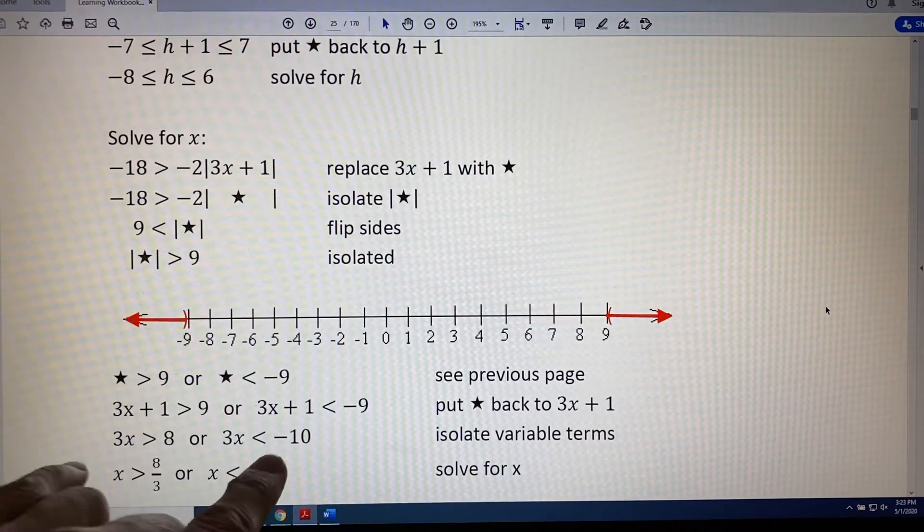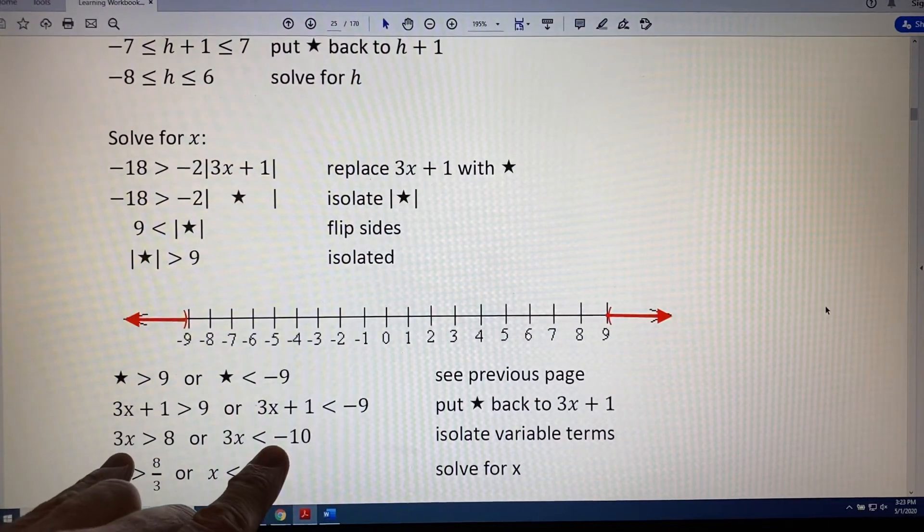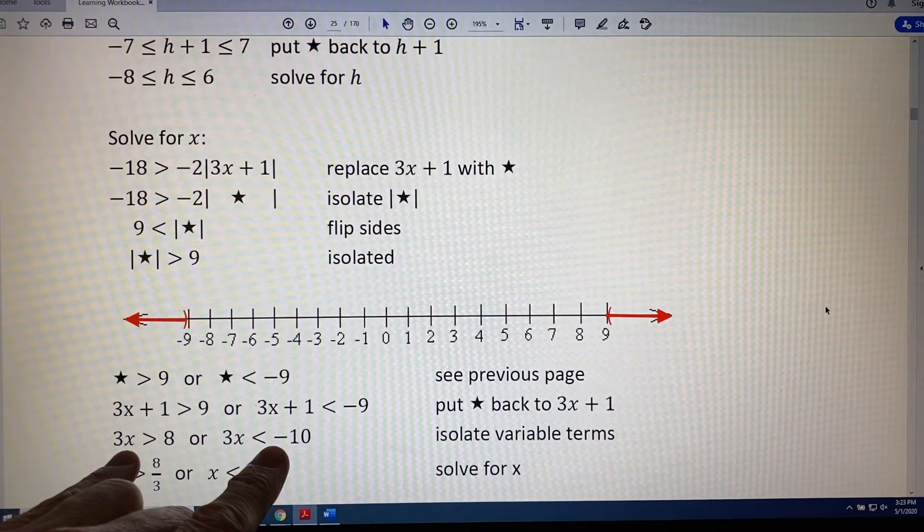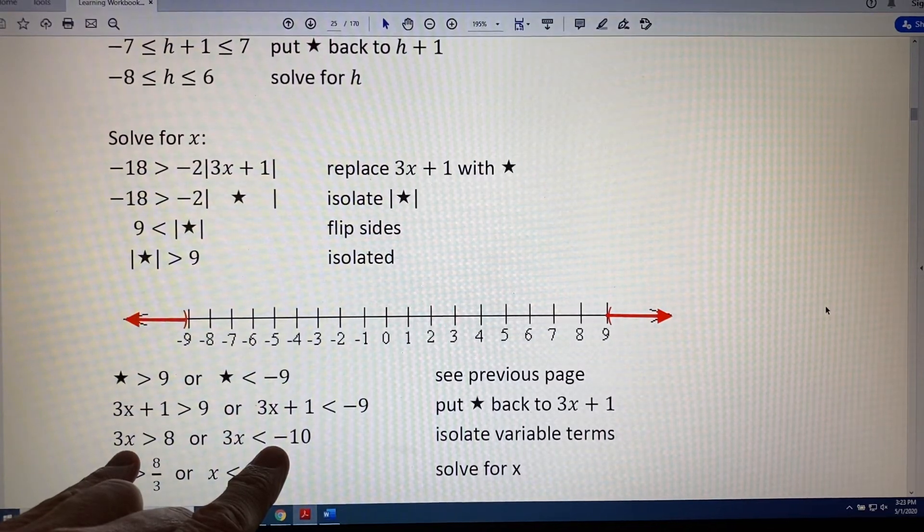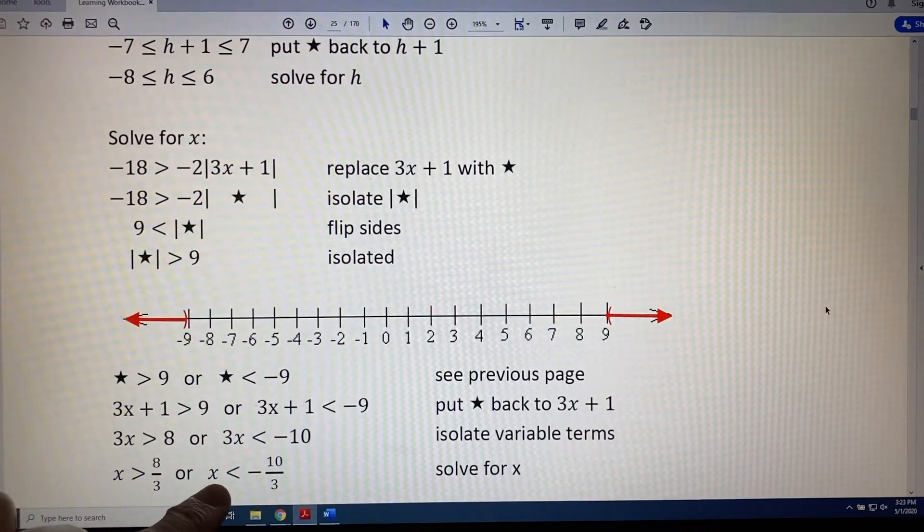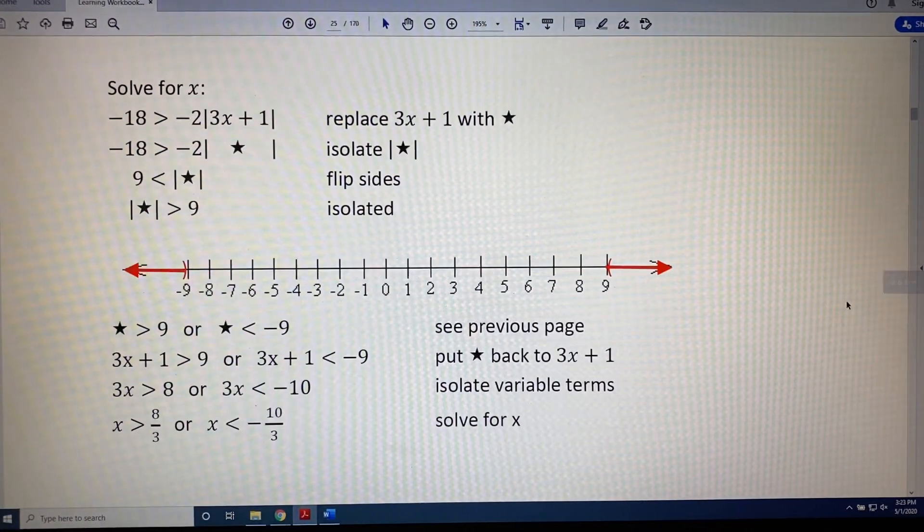In each of those inequality statements, subtract 1 on both sides. So, then you would have 3x is greater than 8 or 3x is less than negative 10. Then, in both of them, divide by 3 on both sides. So, we get x is greater than 8 thirds or x is less than negative 10 thirds.